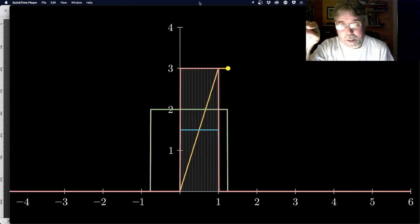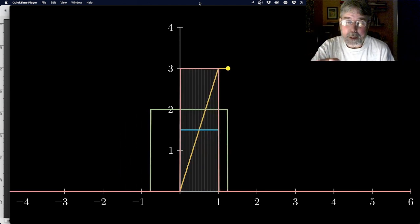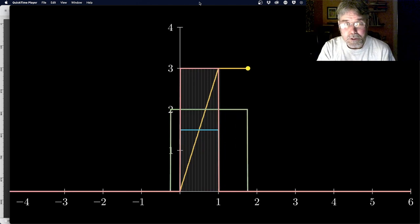At t equals one, it's going to become flat. Why? Well, because the overlap area isn't going to increase anymore. It stays constant. And so as long as the impulse response is still covering the signal, it'll stay constant.